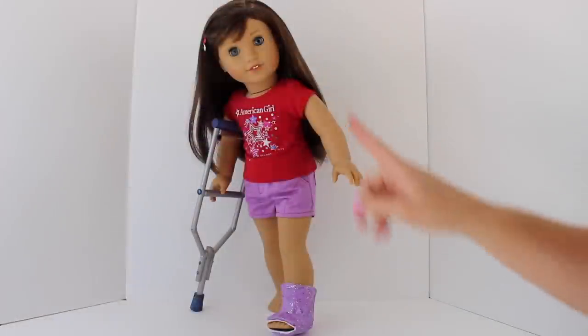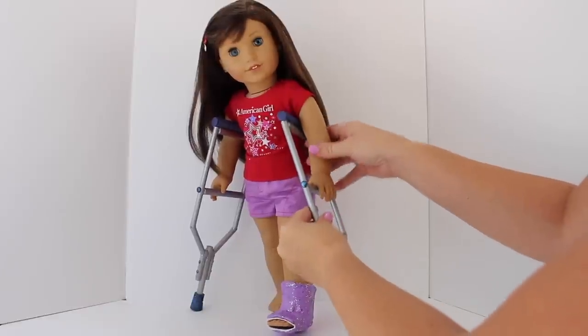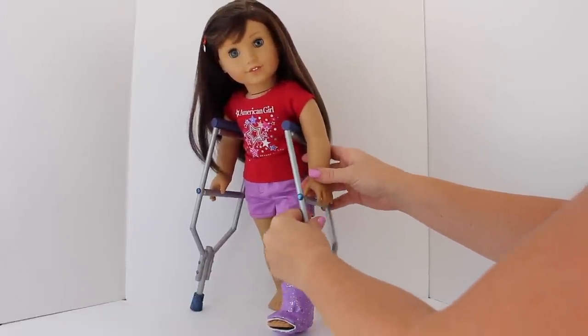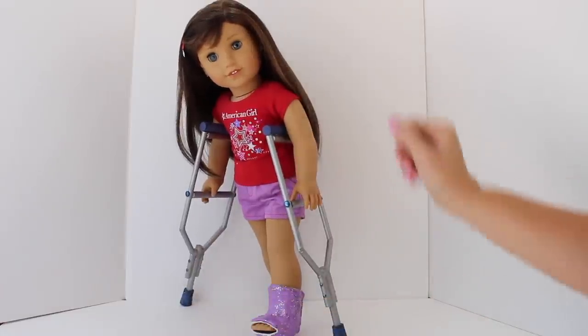Now your American Girl doll crutches are complete. You can angle your doll so she's wobbling and she's not putting support on her bad foot. Place them right underneath her arms and her hands can be on the hand support. These are perfect for your doll hospital.